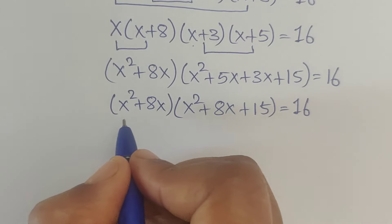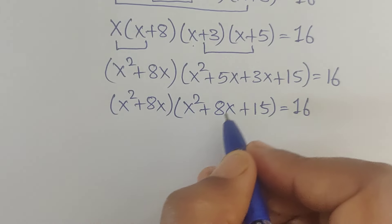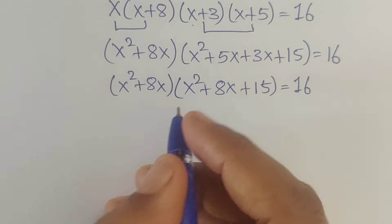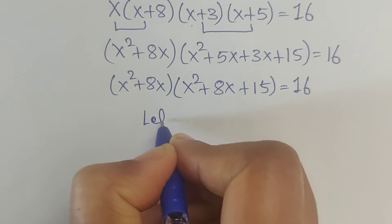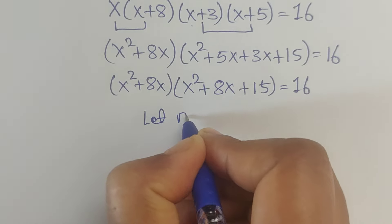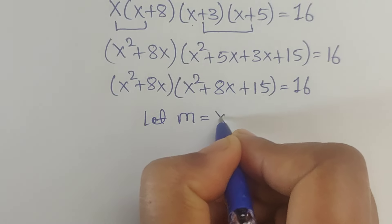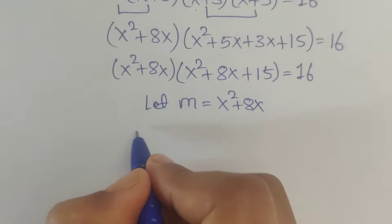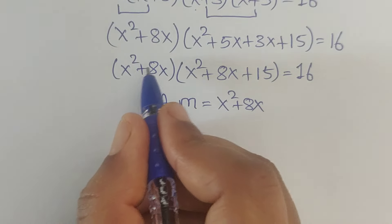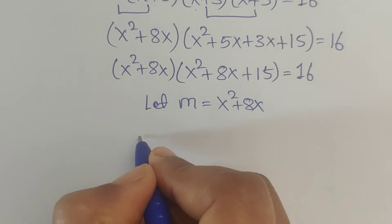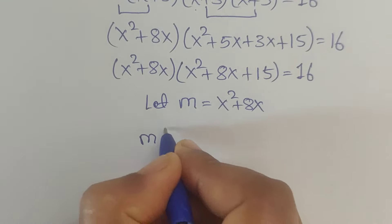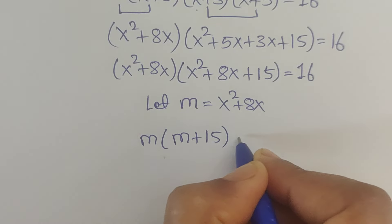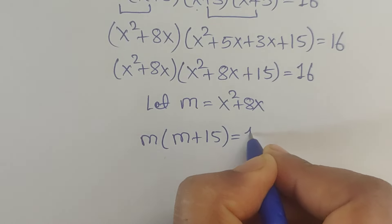Now see here — in both groups we have x squared plus 8x. So let us consider m equals x squared plus 8x. In place of x squared plus 8x we will write m. So the equation becomes m times (m plus 15) equals 16.